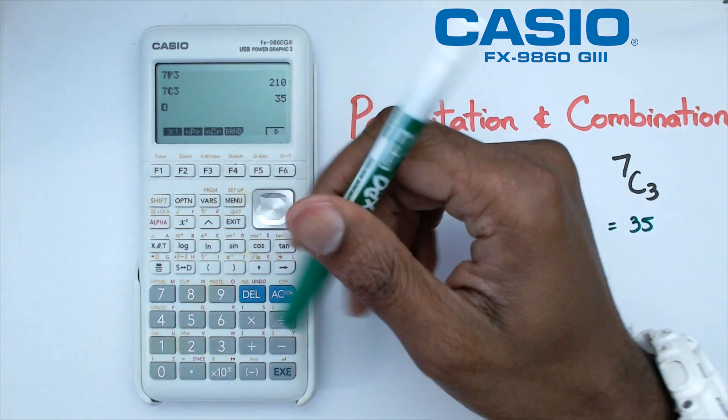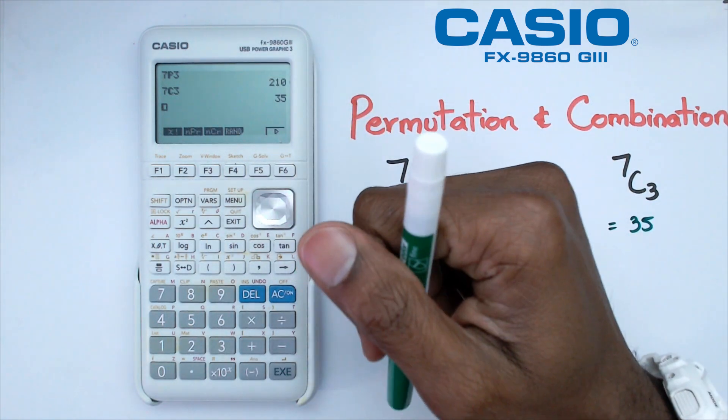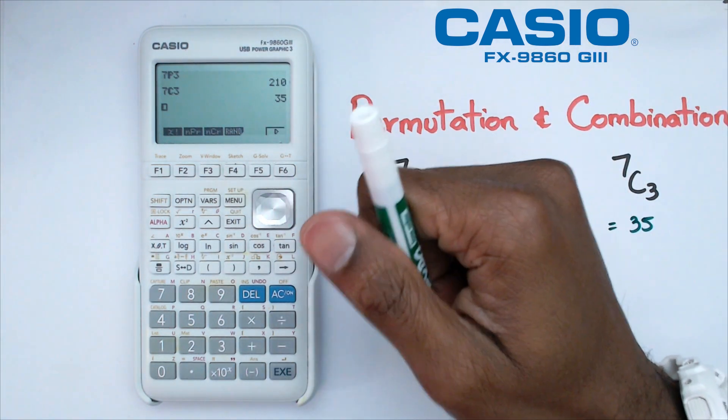And that, folks, is pretty much a quick little video to show you how to find permutation and combination on this particular Casio graphics calculator.